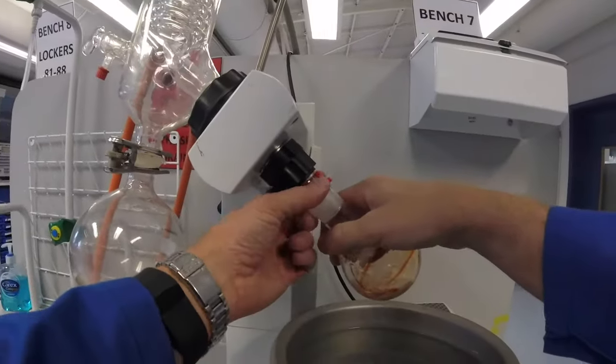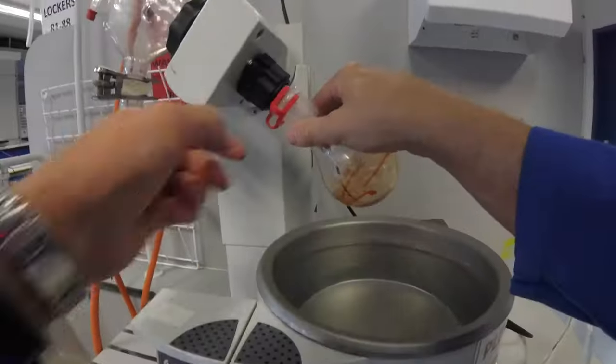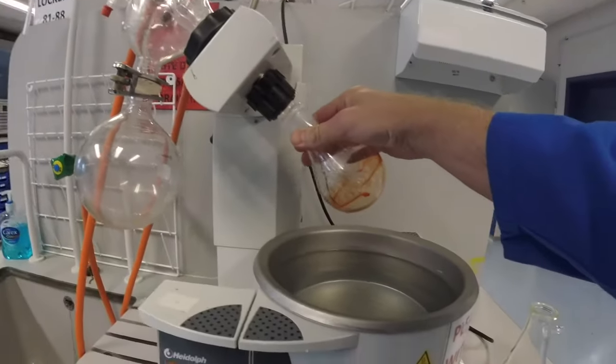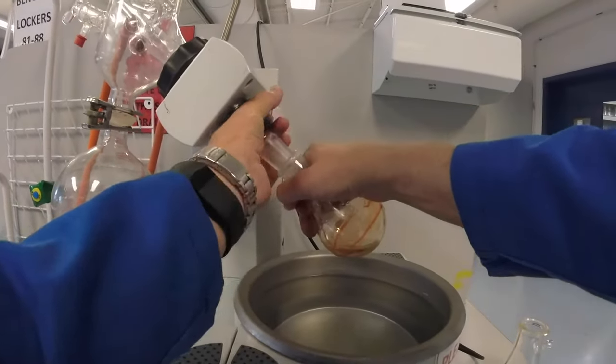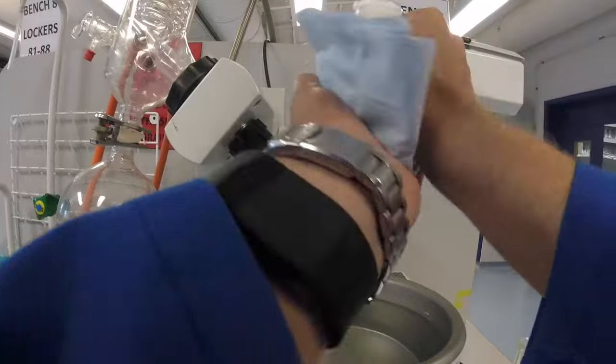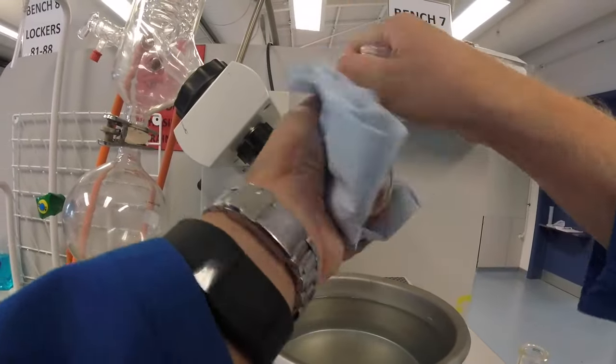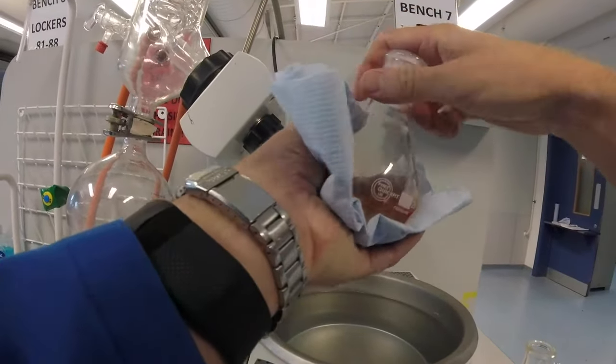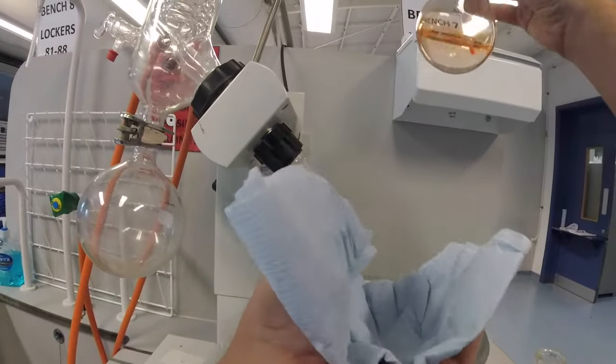Once the vacuum's off, we then are going to unclip, remove, and then you'll want to give the flask a wipe with some blue roll in order to have a dry flask.